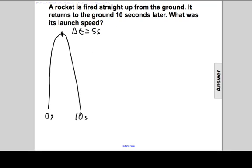Why does it go up and down? It's being accelerated always at a constant rate of g, which is negative 9.8 meters per second squared. And the question is, what is its launch speed?